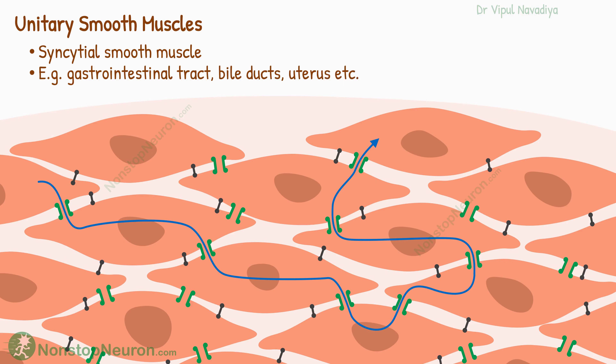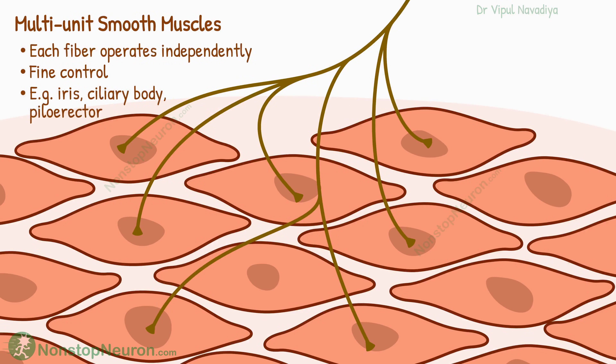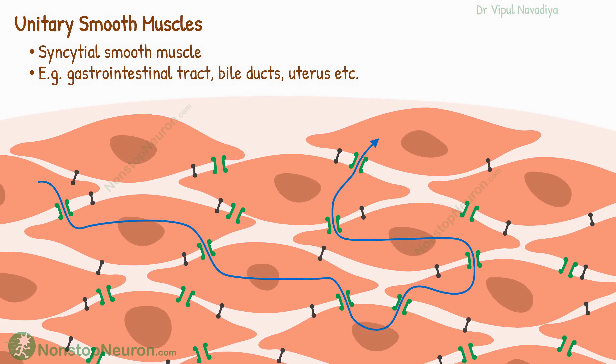So these were the types of smooth muscles. Let's have a quick summary. Smooth muscles are made up of small fusiform muscle fibers. Their contractile elements are basically similar to those in skeletal muscle, but they are organized in a different way. In multi-unit smooth muscle, each fiber operates independently, whereas in unitary smooth muscle, all the muscle fibers contract as a single unit.